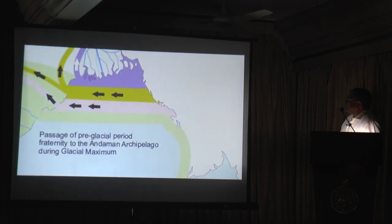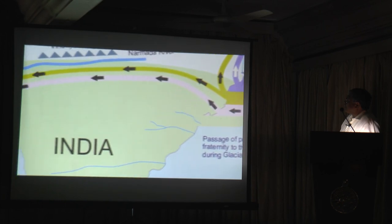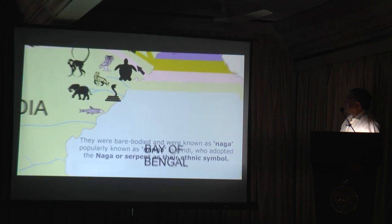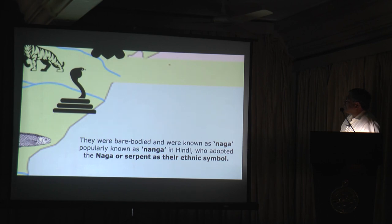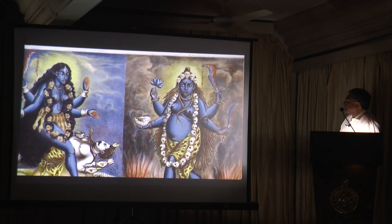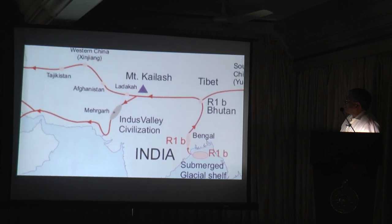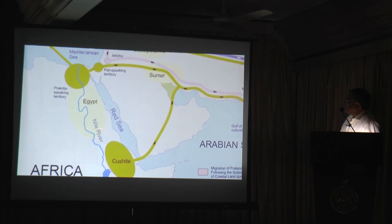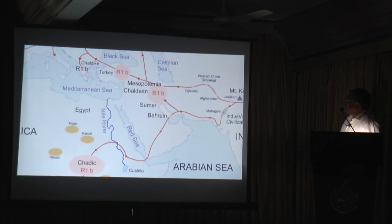As the seawater gradually rose during the interglacial period, this coastal landmass submerged, displacing the settled population. They settled on the Bengal coast and adopted various animal symbols as their ethnic identity. To begin with, they were bare-bodied and known as Naga, popularly known as Nanga in Hindi, who adopted the Naga or serpent as their ethnic symbol. Their mother goddess was possibly Kali, who is also depicted bare-bodied. Some of these early fraternities eventually migrated following the trans-Himalayan migration routes pivoting Mount Kailash. The Indus Valley civilization emerged on this route, and they continued to establish the Egyptian and Greek civilizations. We find R1-Bravo reaching the Mediterranean coast, Afro-Asian-speaking Africa, and Western Europe.